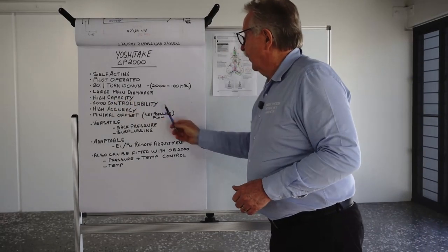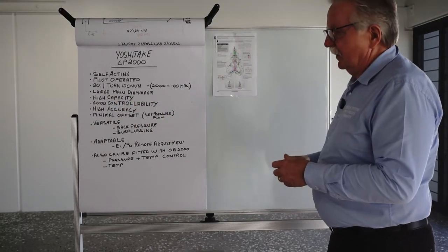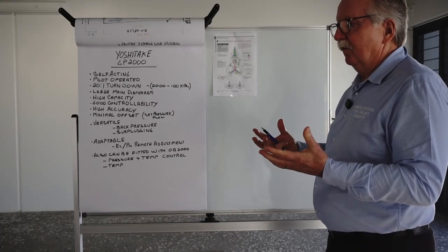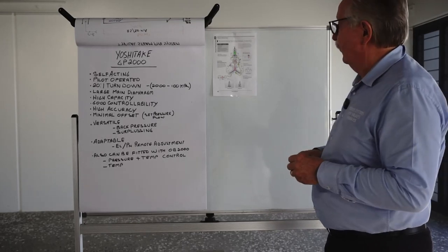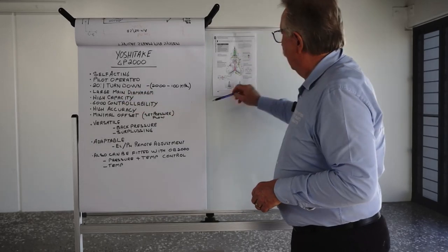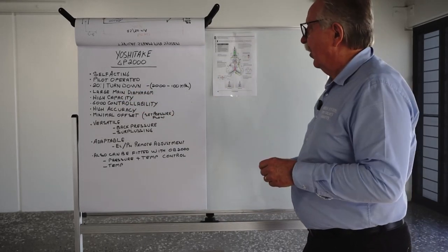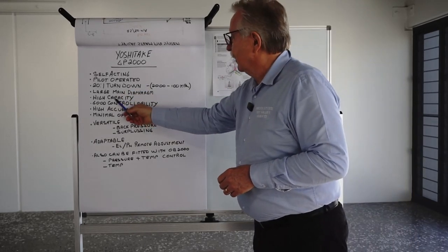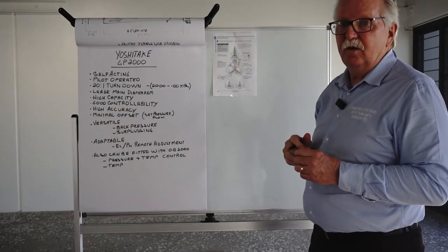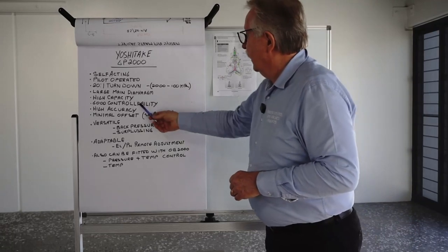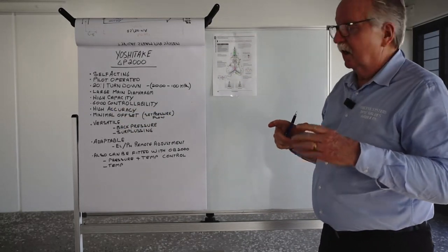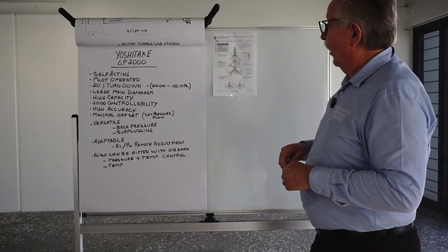The large main diaphragm. We spoke about that. And you need that to get controllability over the valve. The bigger the diaphragm. The better the controllability over your downstream set pressure. Also able to open bigger valves. So you get higher capacity. All GP2000s have a high capacity for their size. And they have good controllability. Mainly because of that larger diaphragm. They are highly accurate. Once they are set.